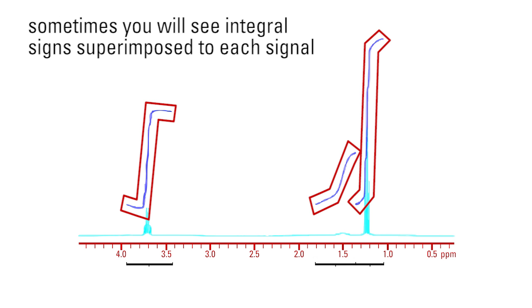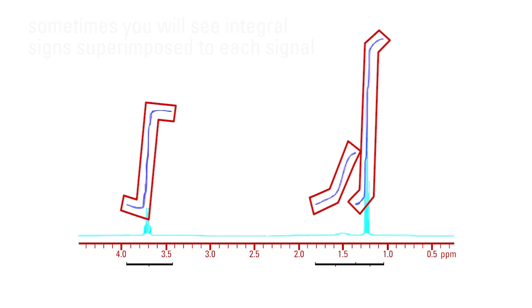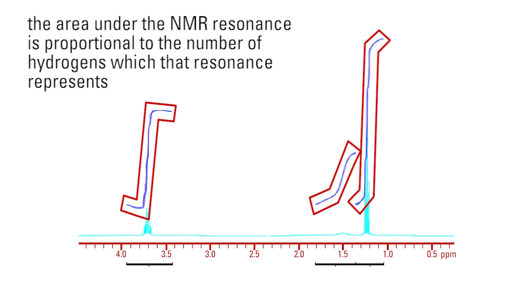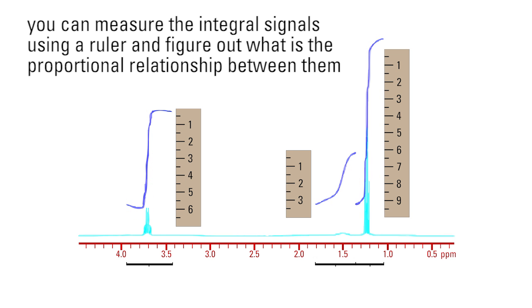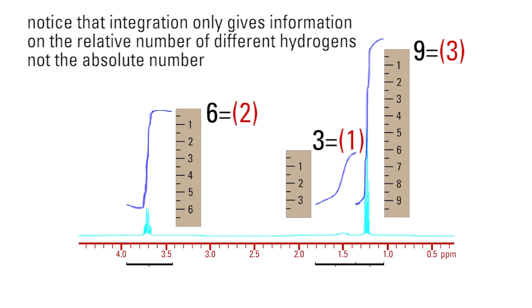The integration is not always given in numerical form. Sometimes you will see integral signs superimposed to each signal, such as in this example. The area under the NMR resonance is proportional to the number of hydrogens which that resonance represents. You can measure the integral signals using a ruler and figure out what is the proportional relationship between them. Notice that integration only gives information on the relative number of different hydrogens, not the absolute number.